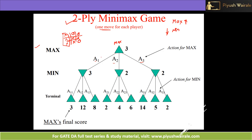Suppose Max performs action a1 — this leads to a new state, and now it is Min player's turn. Min player has three possible actions: a11, a12, and a13. The utility scores of the terminal states are given: 3, 12, and 8. Depending on which action Min takes, we get a particular score.